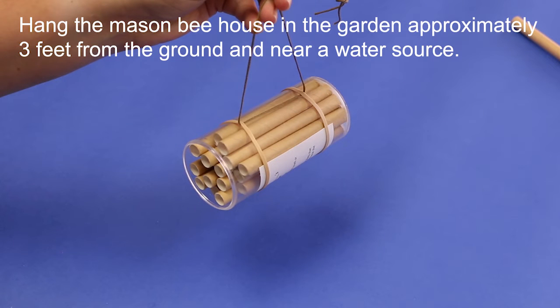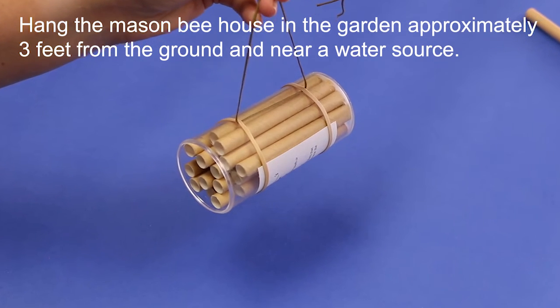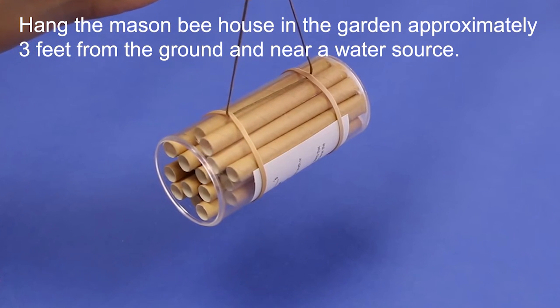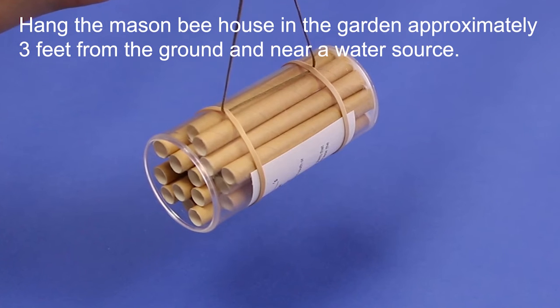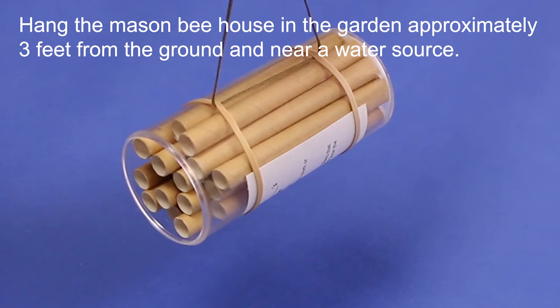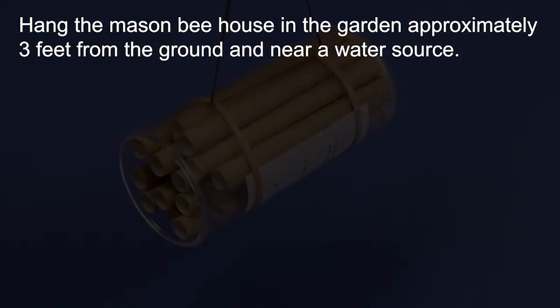Once it is dry, you can hang your mason bee house out in the garden. It's best placed in an area that gets full sun and faces south or southeast. It's good to have it be approximately three feet off the ground and near a water source if possible.